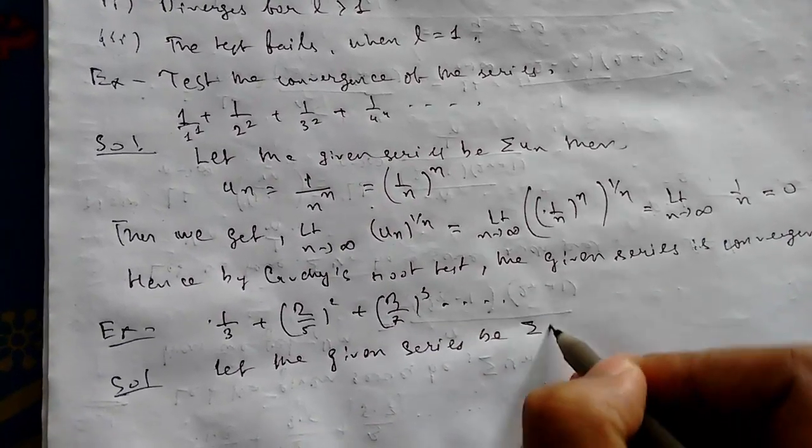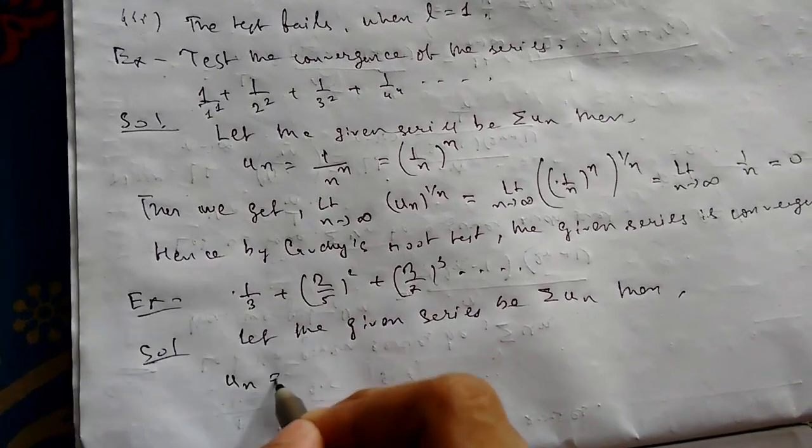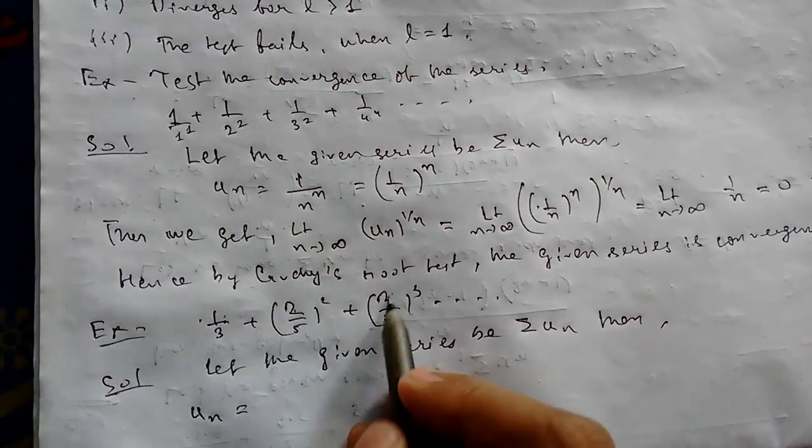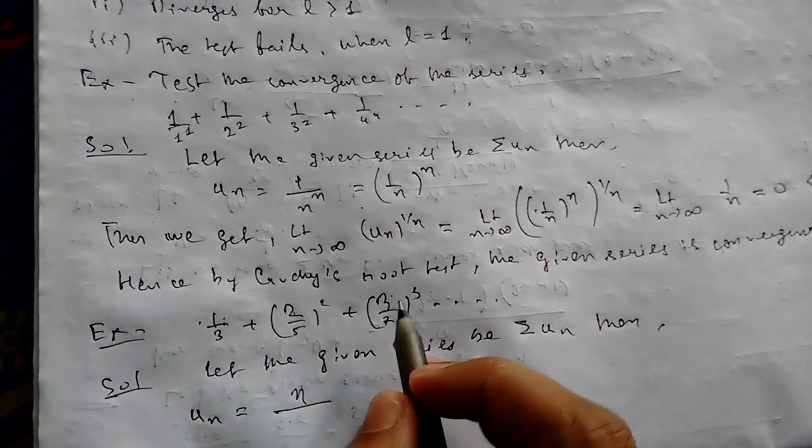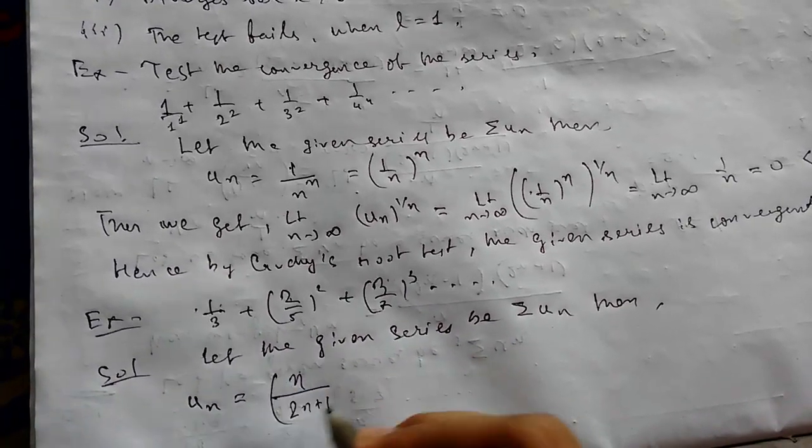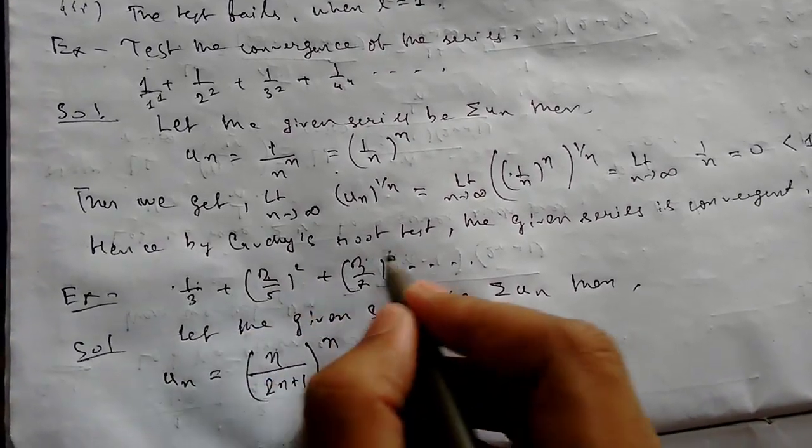Then u_n equals - we have to see how it is increasing: 1, 2, 3, so the numerator will be n. This is odd: 3, 5, 7, so this will be 2n+1. The general term is [n/(2n+1)]^n, whole to the power n.